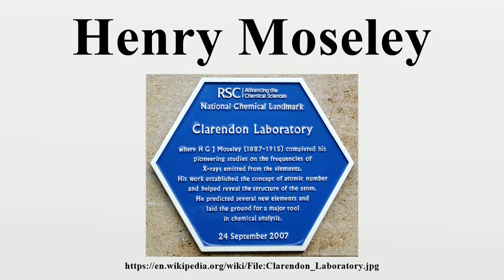Sometime in the first half of 1914, Moseley resigned from his position at Manchester, with plans to return to Oxford and continue his physics research there. His family and friends tried to persuade him not to join, but he thought it his duty. Moseley served as a technical officer in communications during the Battle of Gallipoli in Turkey, beginning in April 1915, where he was killed in action on 10 August 1915. Moseley was shot in the head by a Turkish sniper while in the act of telephoning a military order. As Isaac Asimov wrote, in view of what he, Moseley, might still have accomplished, his death might well have been the most costly single death of the war to mankind.